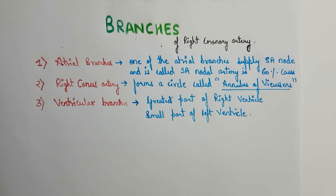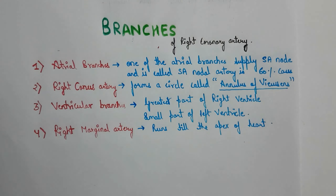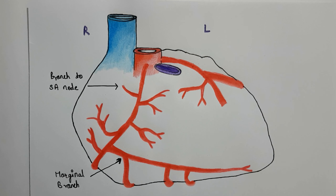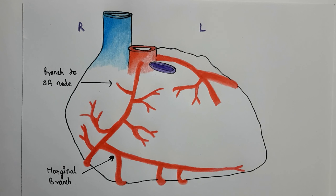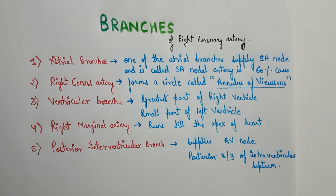The third branches are the ventricular branches, which supply the greater part of the right ventricle and a small part of the left ventricle. The fourth branch is the right marginal artery, which runs to the apex of the heart. The fifth branch is the posterior interventricular branch, which supplies the AV node and the posterior one-third of the interventricular septum.